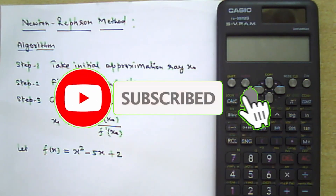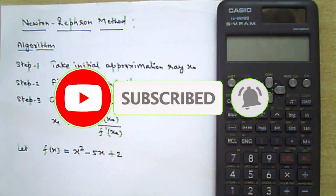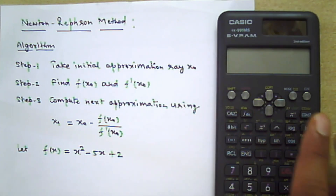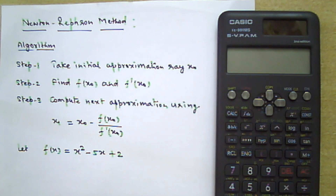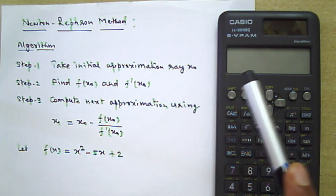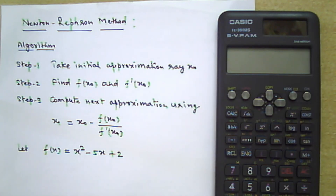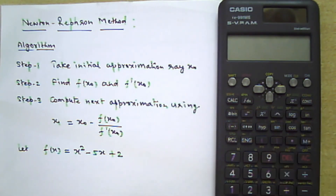Hello everyone, welcome to this channel. Today I will demonstrate how to use a scientific calculator for finding the approximation using the Newton-Raphson method. I am using the CASIO scientific calculator, model FX-991MS second edition.